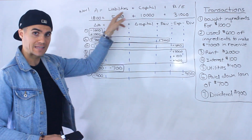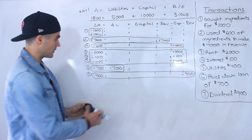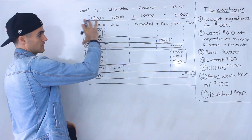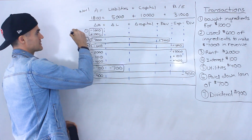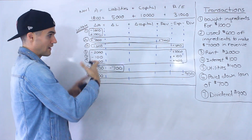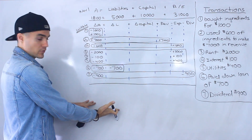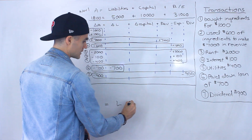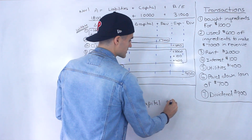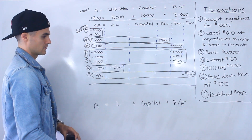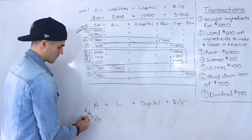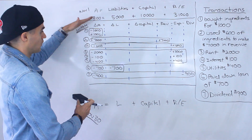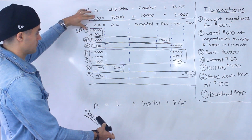Now we're going to take the beginning balance sheet, apply all the changes within the period, and end up with the ending balance sheet. So we've got the beginning balance sheet, all the changes within November, and then after those changes we get our ending balance sheet — in the same format: assets equals liabilities plus capital plus retained earnings. The ending is November 30th.